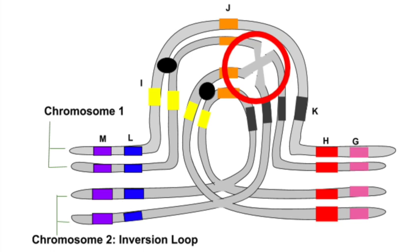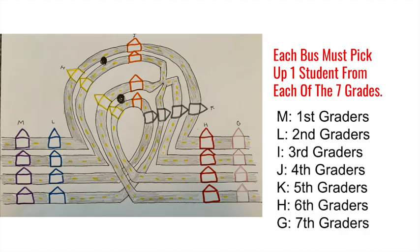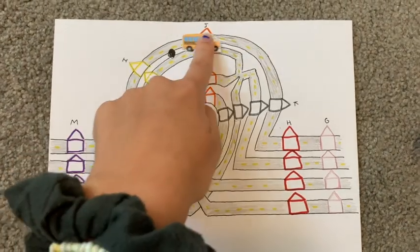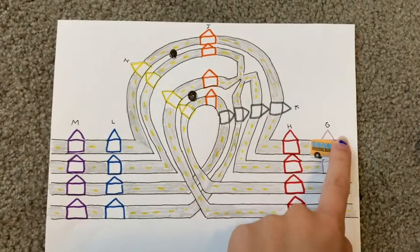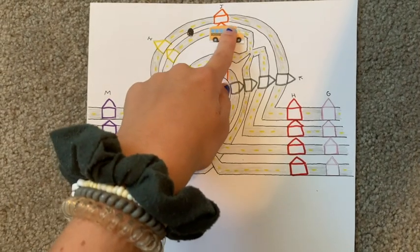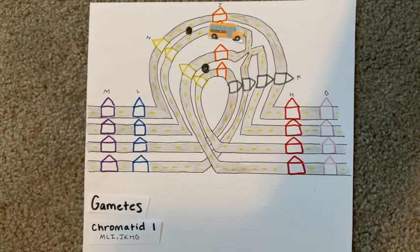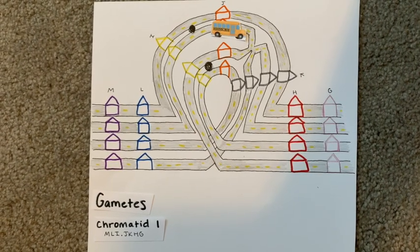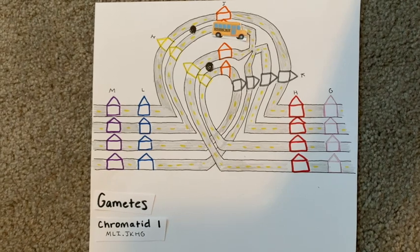Let's follow our loops to see what type of gametes will result from individual 1's sister chromatids. Let's think of our diagram as four different routes that four different school buses take to pick up kids. These buses must pick up kids from grades 1 to 7. Following the route for chromatid number 1, we will pick up M-L-I centromere J-K-H-G. For our second chromatid, following our route, we will pick up M-L-I centromere J, and here is where things get a bit different. This route can sometimes be dangerous in the rain, meaning the bus driver has to turn onto a different road fast, missing certain houses and going to ones they don't usually pick up on the path.